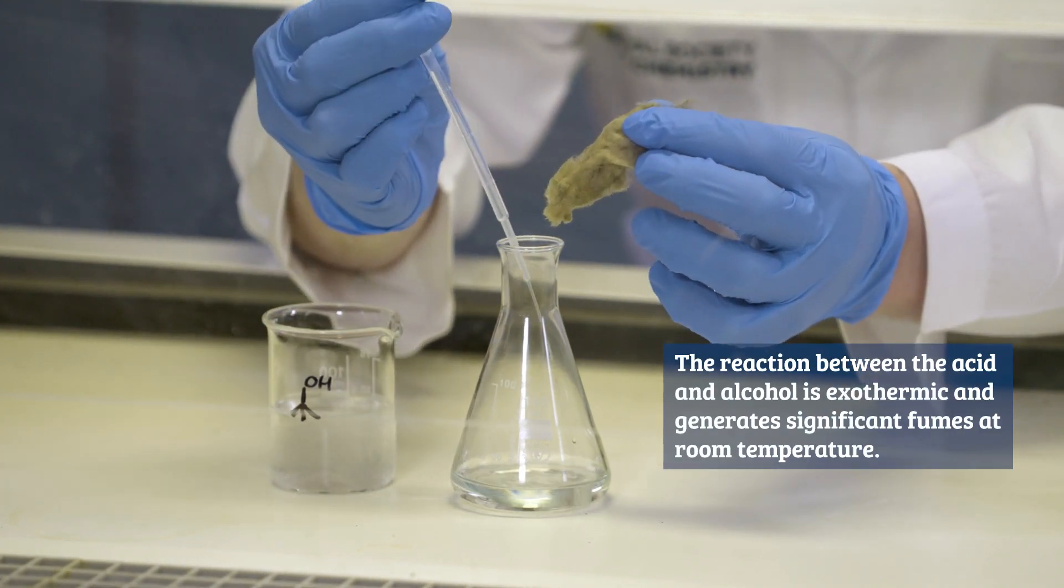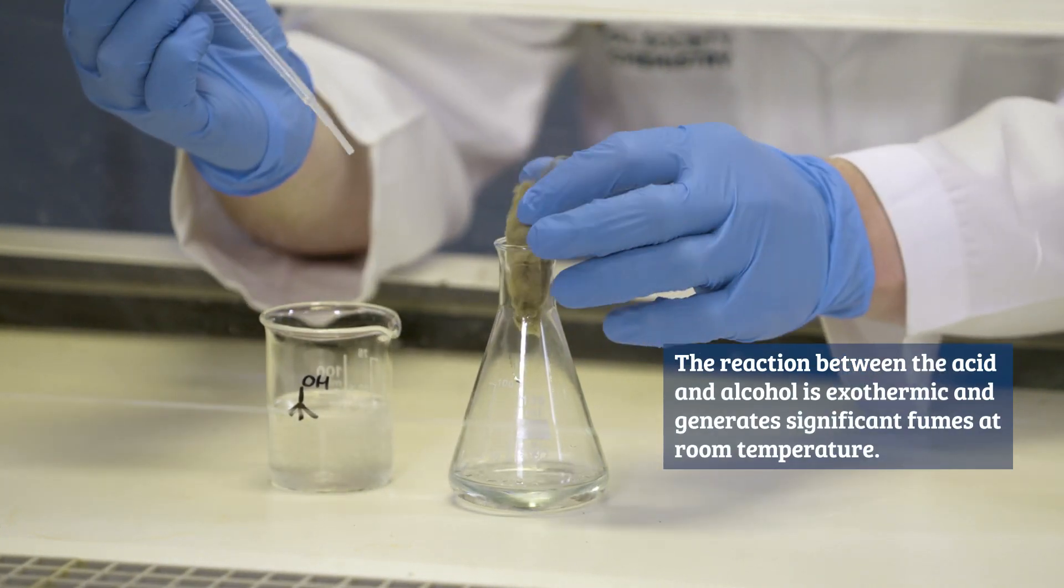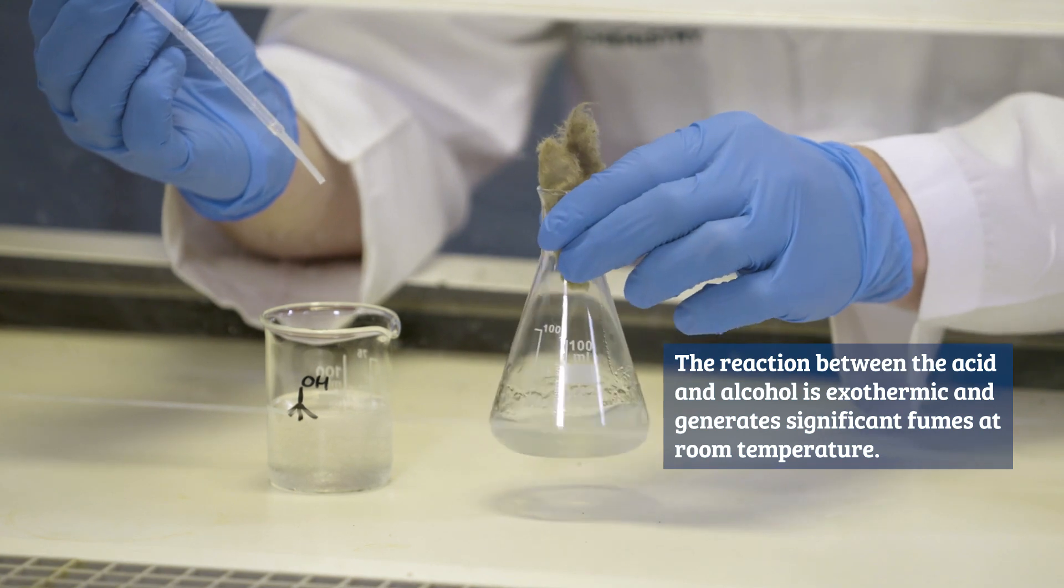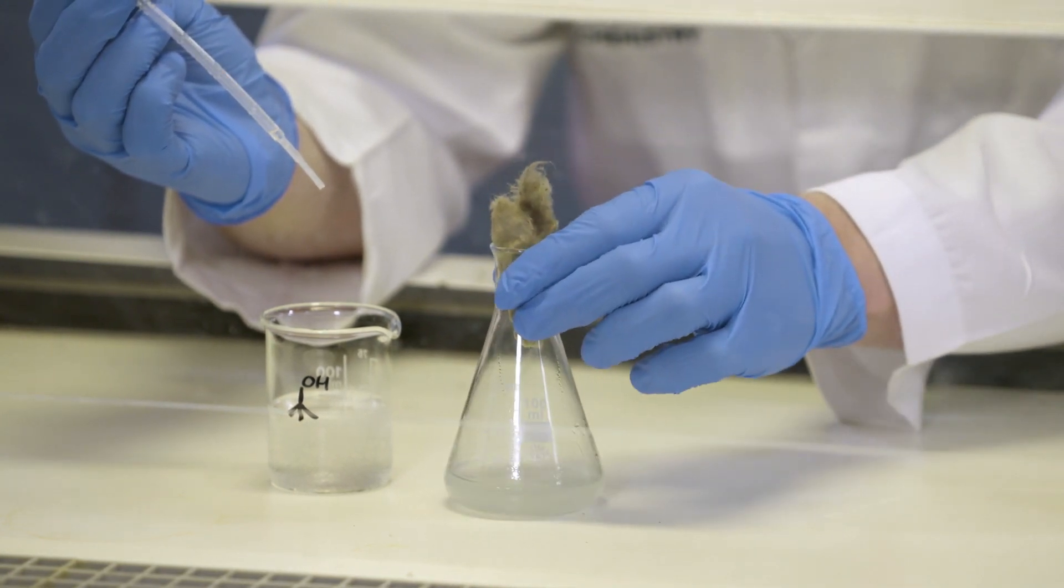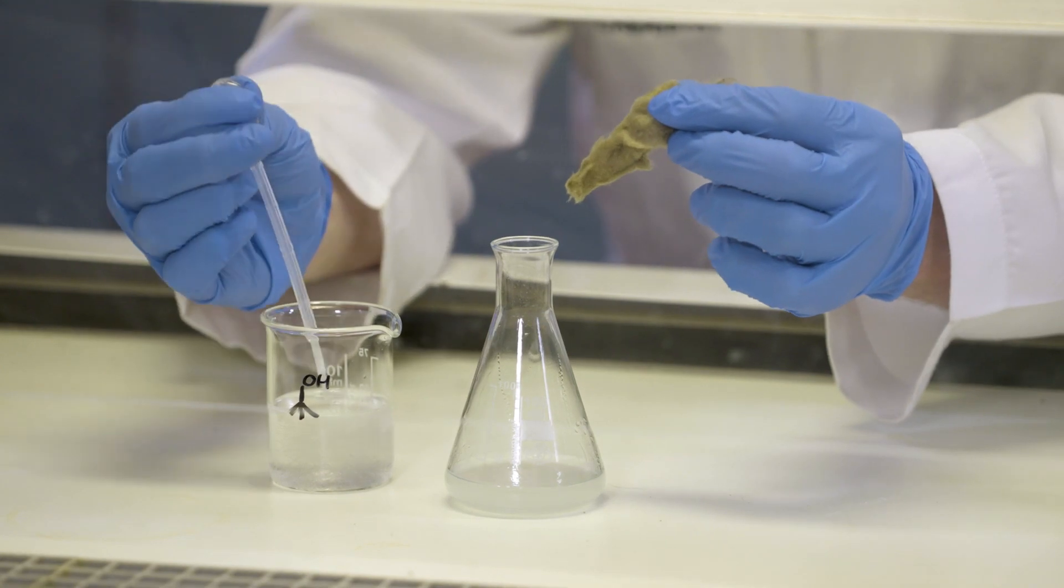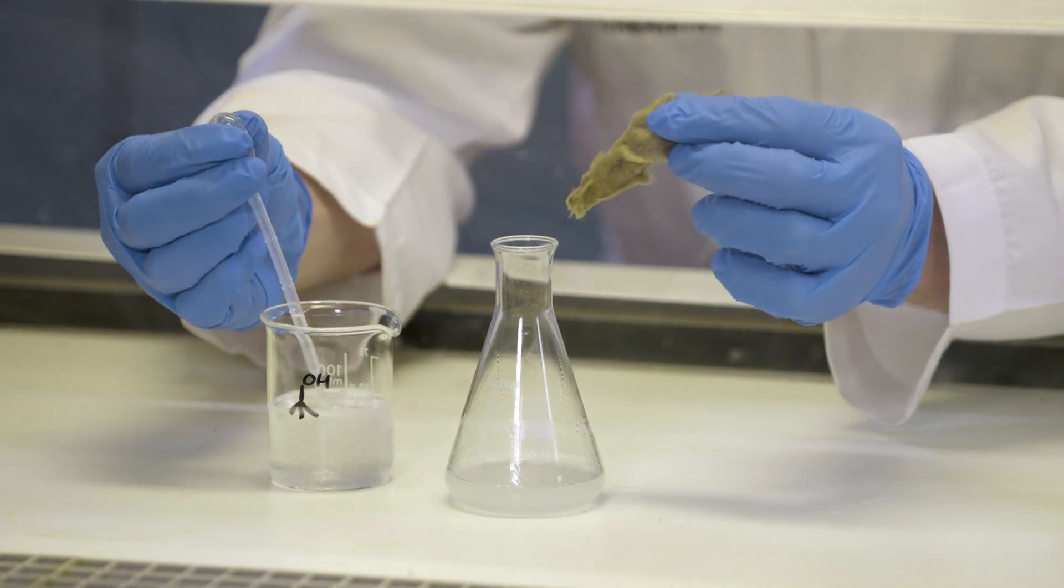Now, I will gradually add around 6 centimeters cubed of the 2-methylpropane 2-ol to the conical flask, 1 centimeter cubed at a time. Replace the plug and give a swirl after each addition. This will take a couple of minutes.